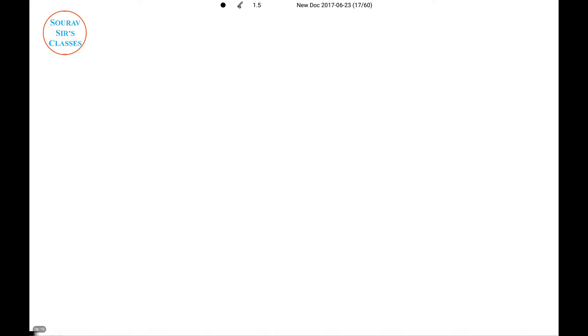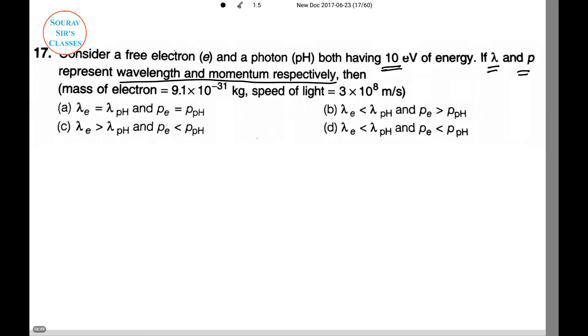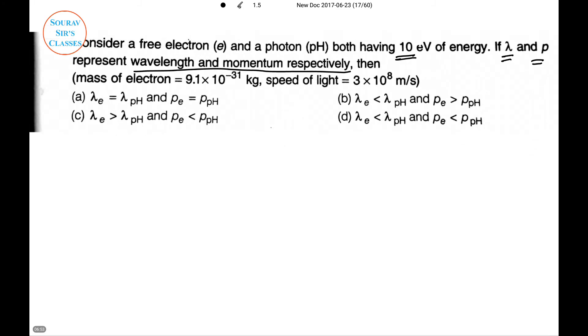Question 17: This is a challenging one. Consider a free electron e and a photon, both having energy of 10 eV. If λ and ρ represent wavelength and momentum respectively, then which of them will be correct? We need to find the relationship between λe and λph.